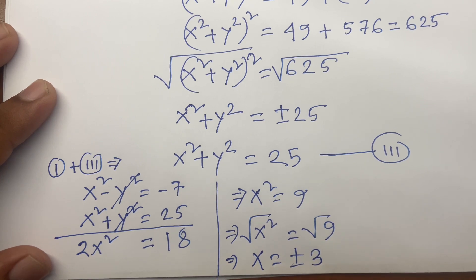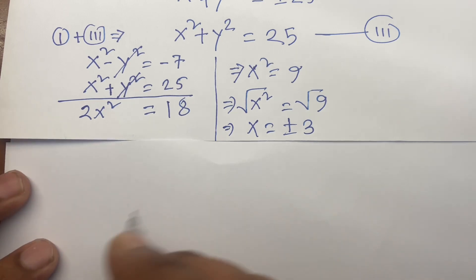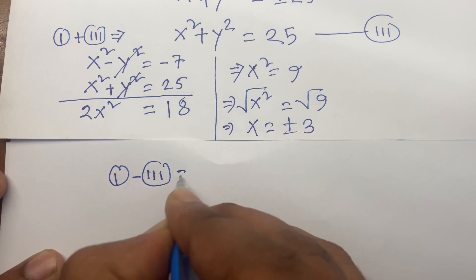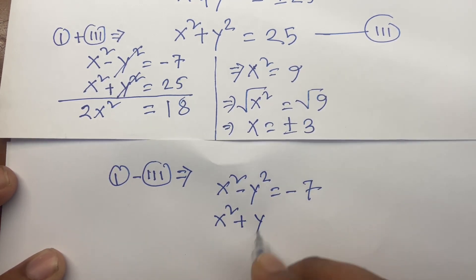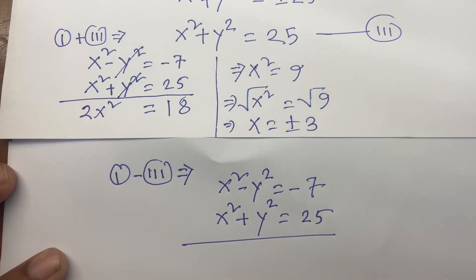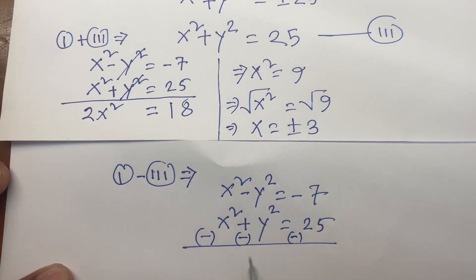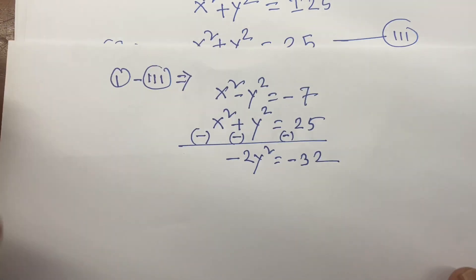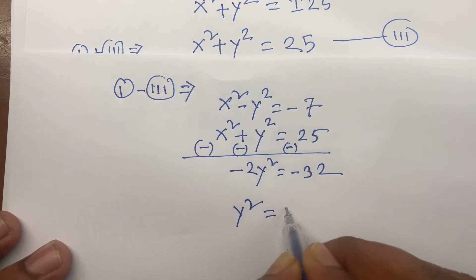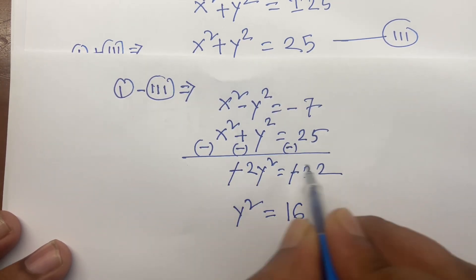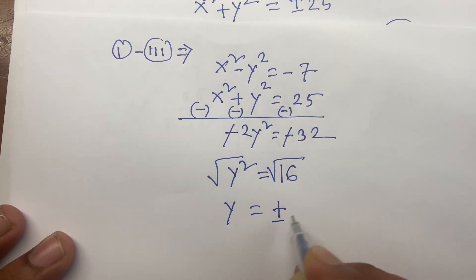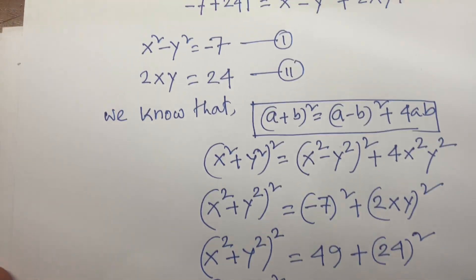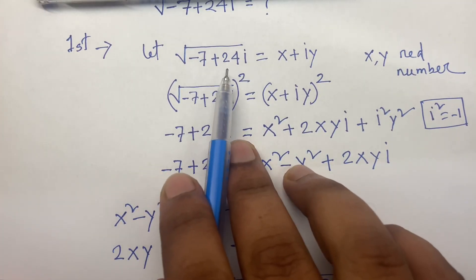Subtracting equation 3 from equation 1: (x² − y²) minus (x² + y²) equals −7 minus 25, so minus 2y² equals minus 32, giving y² equals 16, and y equals plus or minus 4.